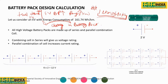For an electric vehicle, the energy consumption is defined in watt-hours per kilometer — how much energy the vehicle consumes to cover one kilometer. For example, the vehicle in this example is going to consume an energy of 161.74 watt-hours per kilometer.